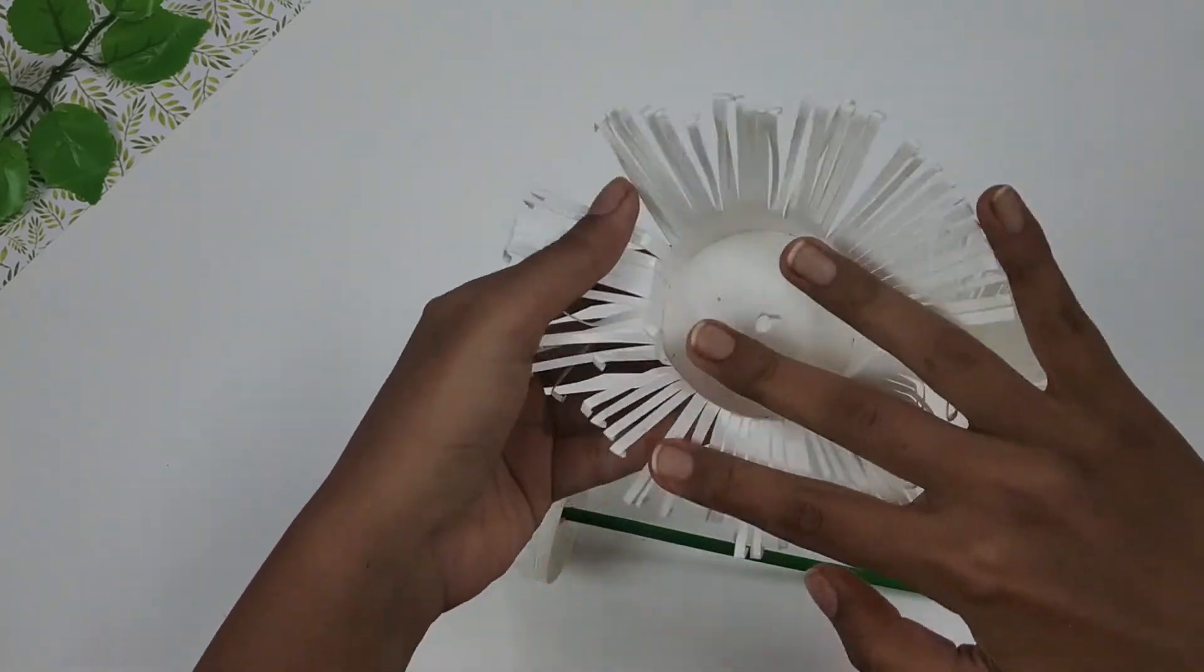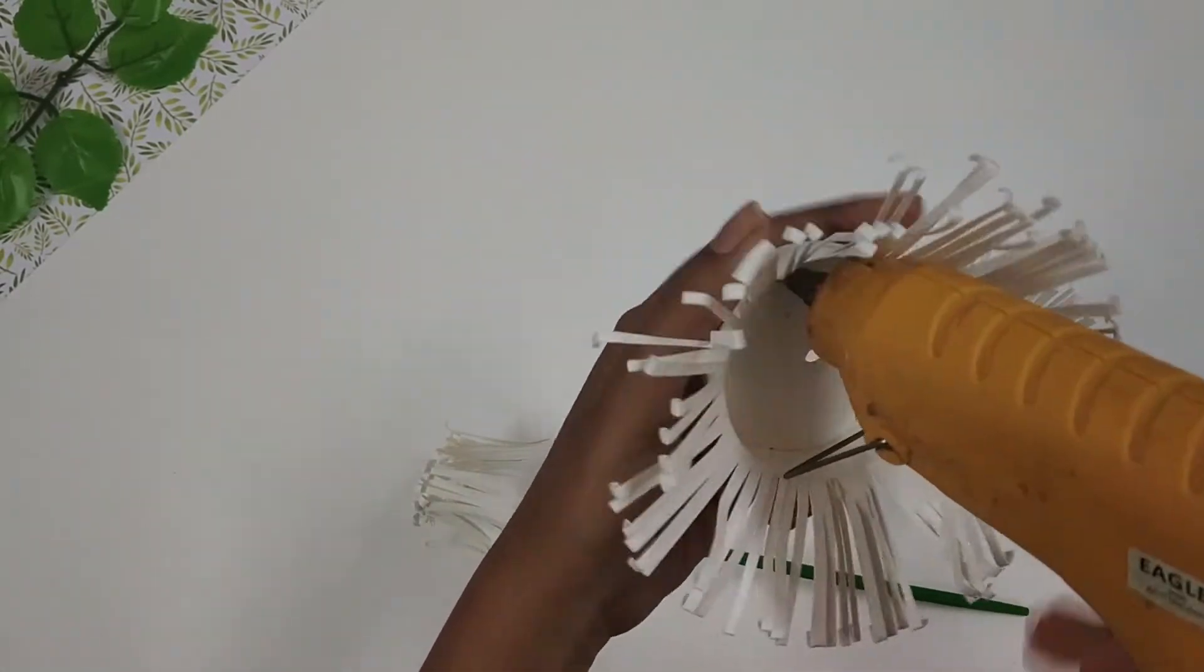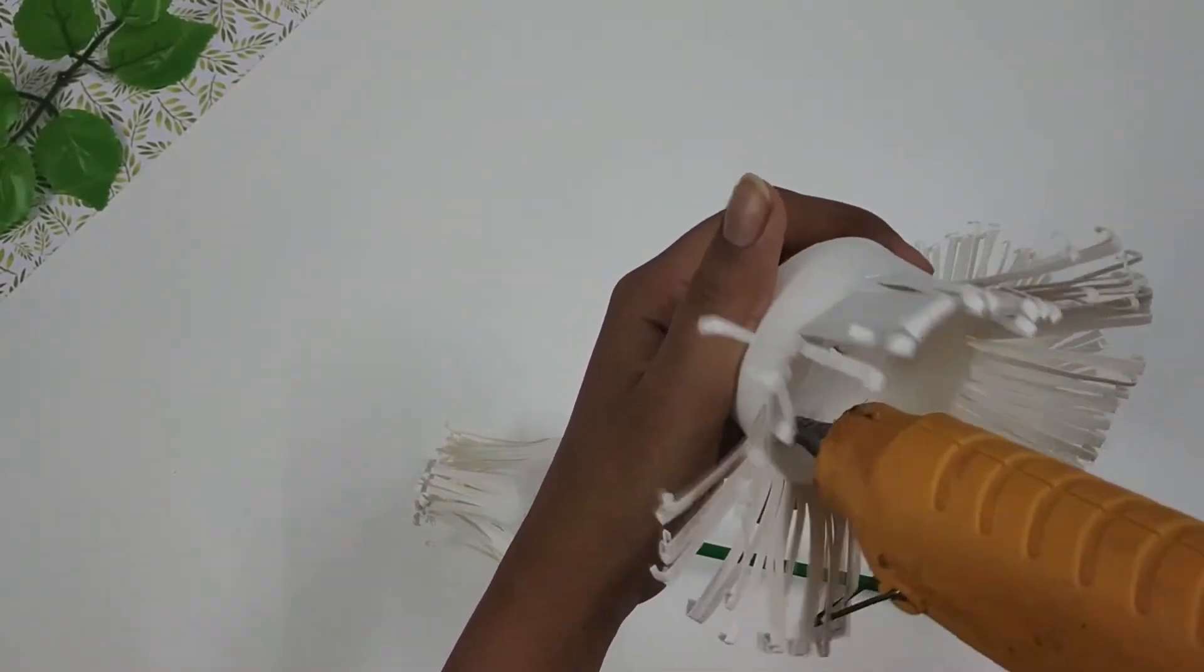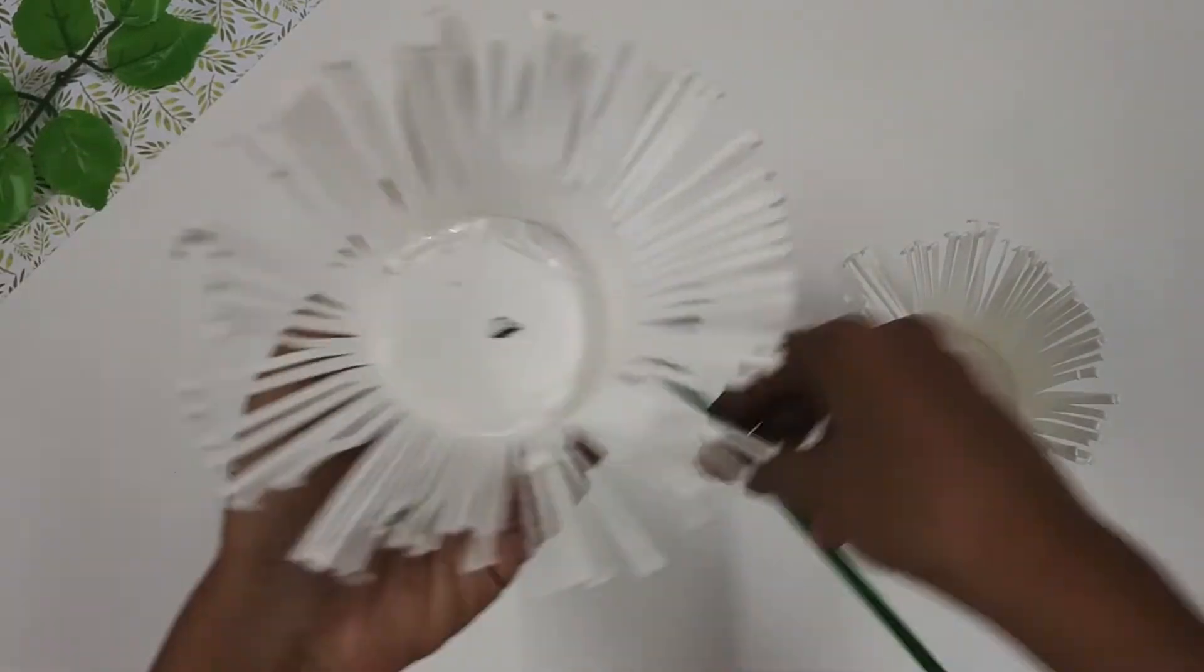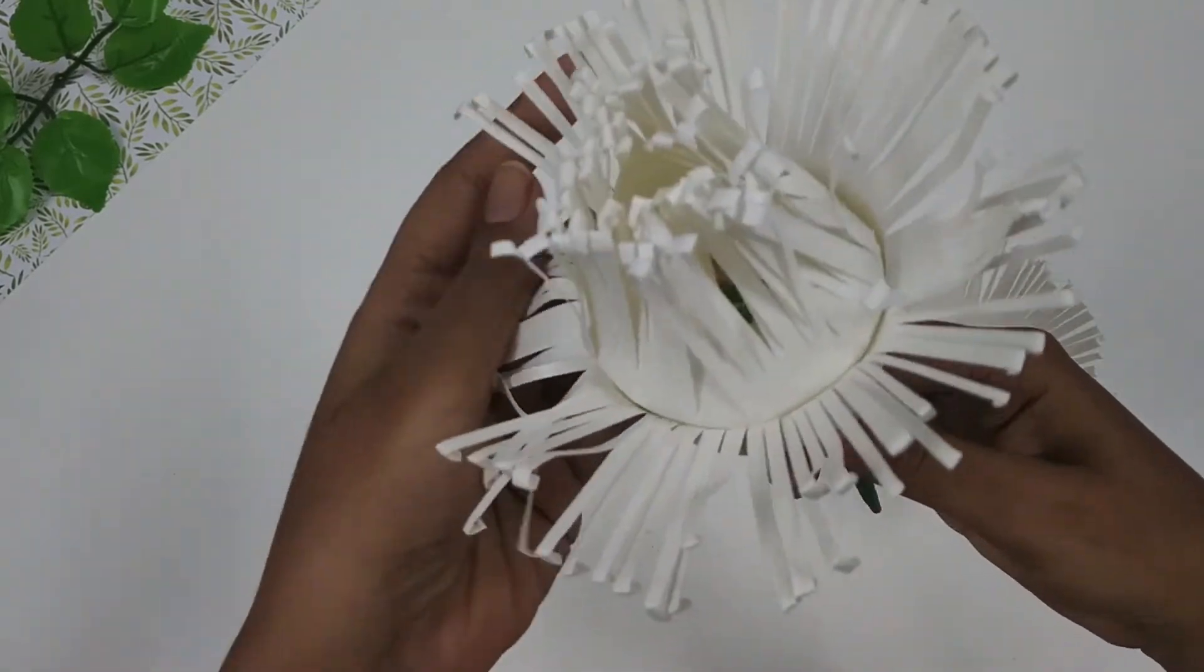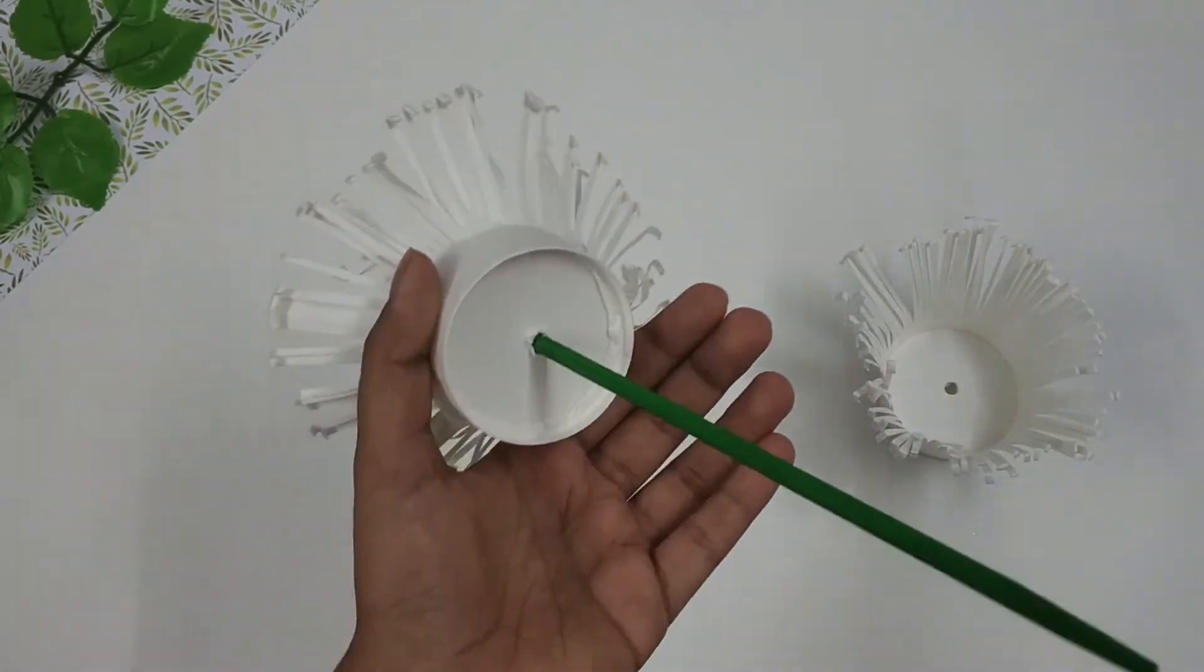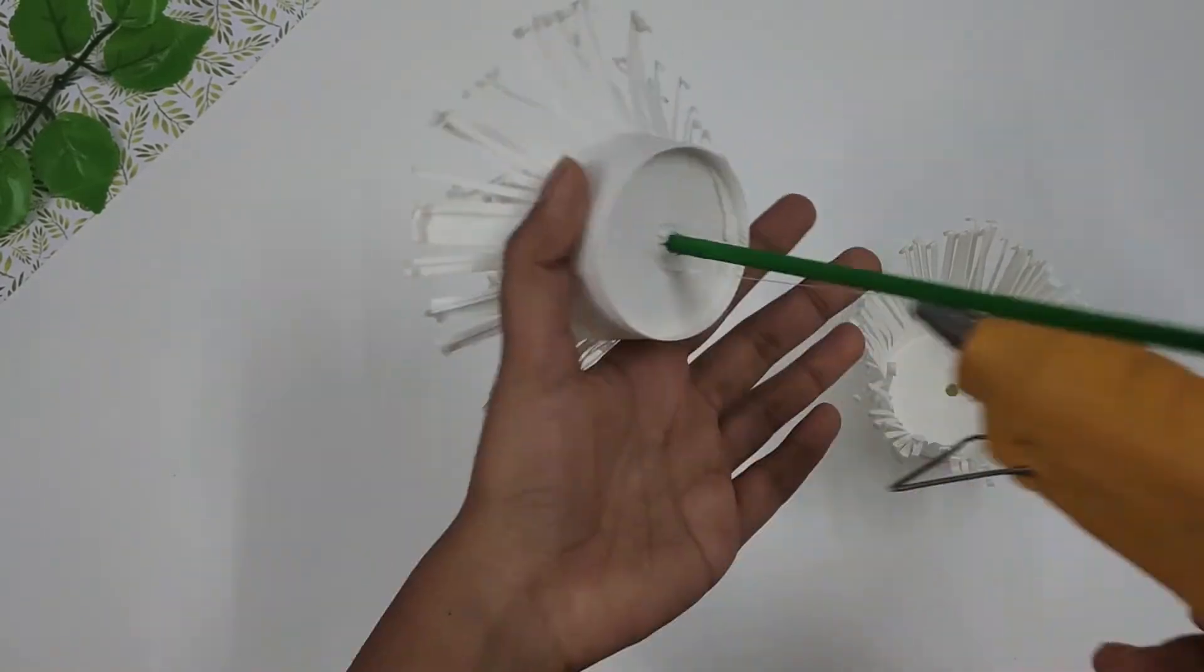Next, I'll take the second cup and apply some hot glue on the inside, and now I'll attach it below the first cup like this. Now I'll apply some hot glue to secure it.